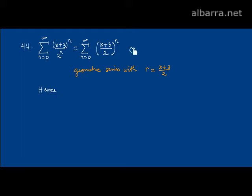Let us refer to this series as star. Star is convergent only when the absolute value of the ratio is less than 1.